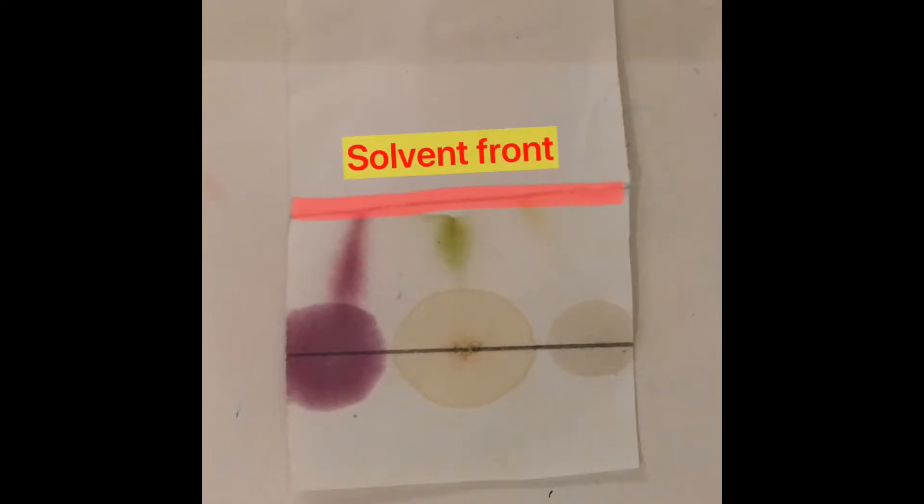Once it is dry, we will draw the solvent front, which is the length from the baseline to the distance that the solvent has travelled. In this case, the propanone has travelled 2.3 centimeters. Then we will measure the length that the pigment has travelled.